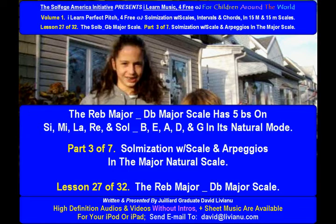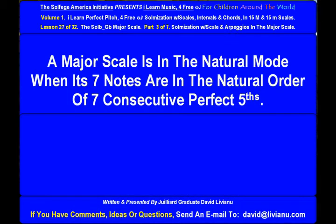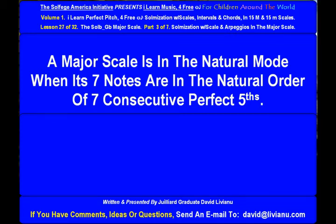The Re-flat major D-flat major scale has 5 flats on C, Mi, La, Re, and Sol — that is, B, E, A, D, and G — in its natural mode. A major scale is in the natural mode when its 7 notes are in the natural order of 7 consecutive perfect fifths.